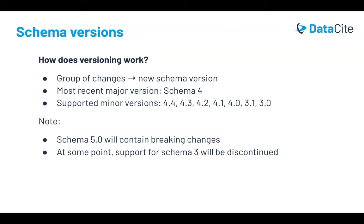Minor versions do not contain breaking changes, but major versions do contain breaking changes which are not backwards compatible. For example, schema 4.5 is a minor version that will not contain breaking changes, but the upcoming schema 5.0 will have breaking changes. At some point after releasing schema 5, we will also work towards discontinuing support for schema 3.